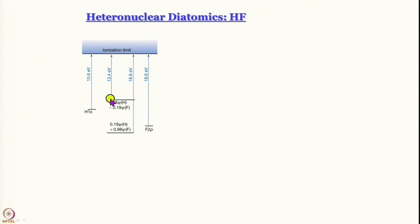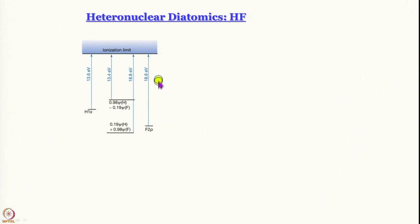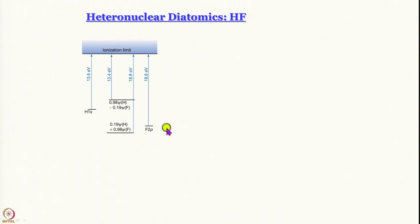For HF we get an ionization energy of 13.4 eV, which is very close to the value of 13.6 eV for hydrogen, and we get another one at 18.8 eV, which is very close to the ionization energy of the fluorine 2p orbital. What we understand from this experimental result is that there is one molecular orbital in HF whose energy is very close to that of the 1s orbital of hydrogen, and another orbital whose energy is very close to that of the 2p orbital of fluorine.